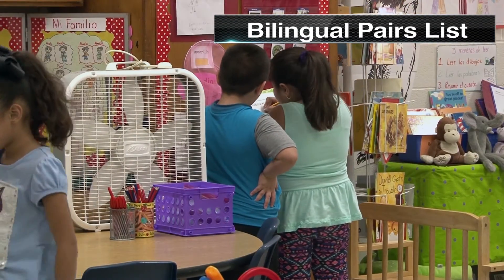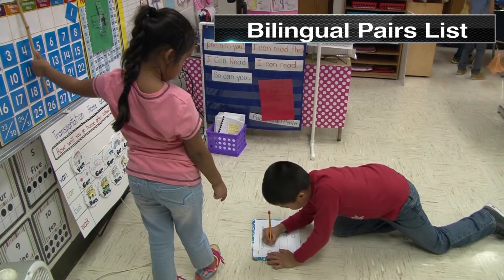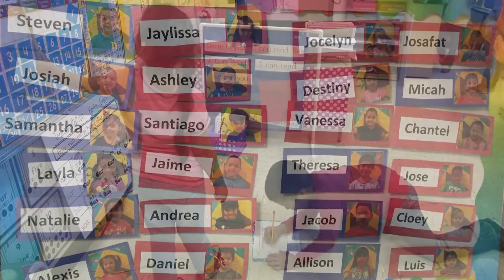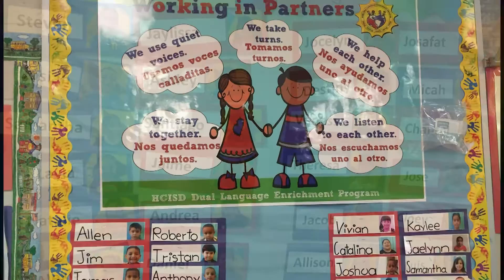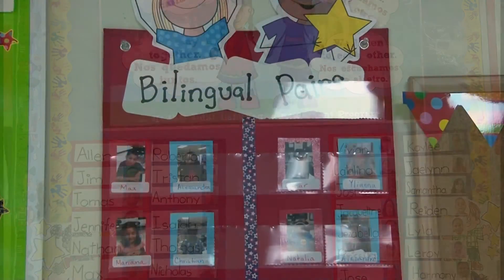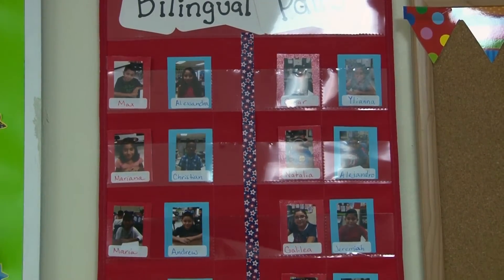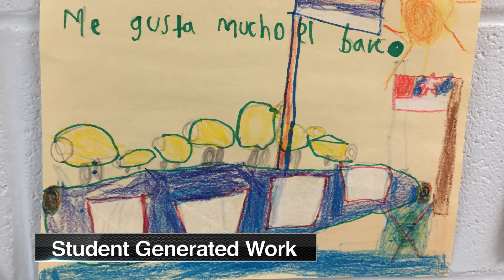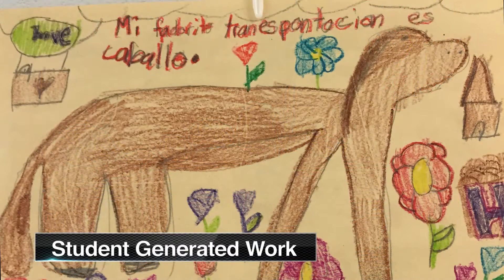In the Gomez and Gomez dual language model, students are paired up all day based on language and content ability to support each other's language and content learning. As part of your environment, a list of bilingual pairs should be posted in every classroom. Bilingual pairs can change throughout the day and in different content areas. It is recommended that the list of bilingual pairs is created in a way that is easily interchangeable. When planning the layout of your classroom, it is important to set aside space for displaying student-generated work in both languages.